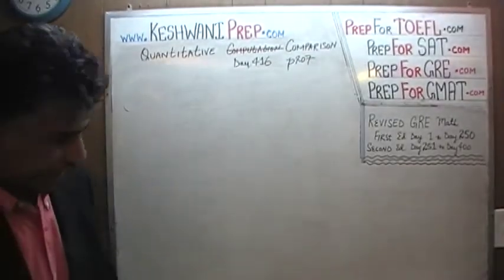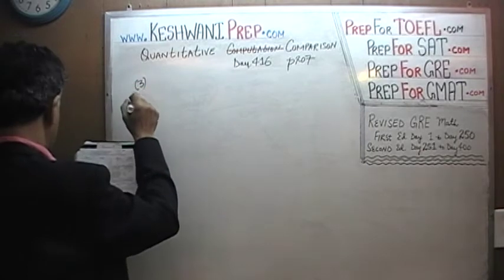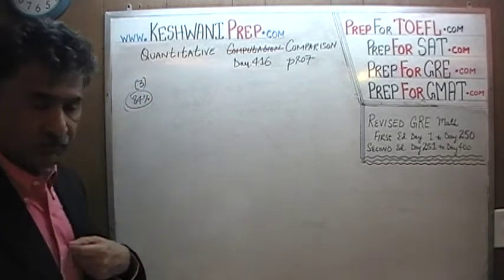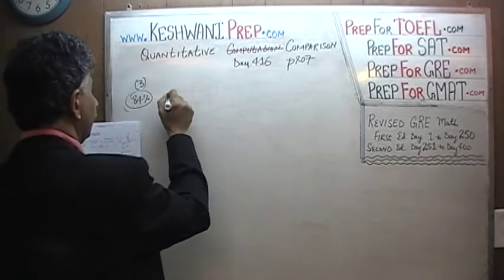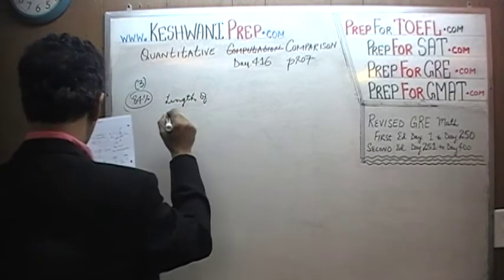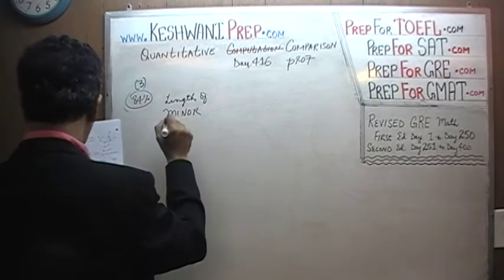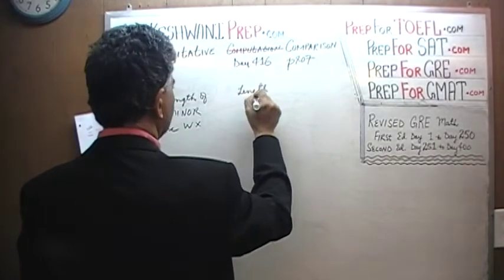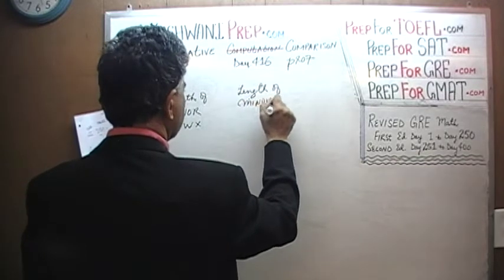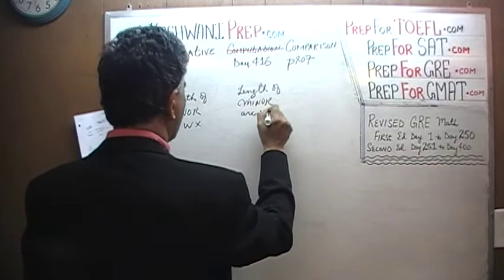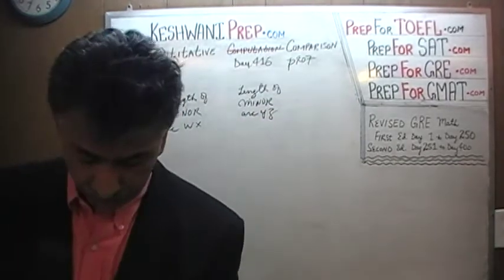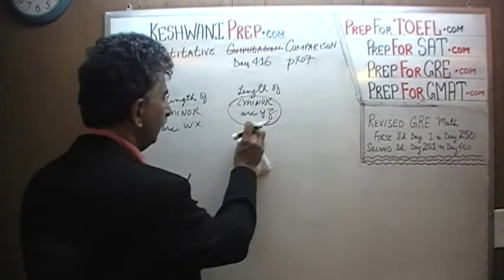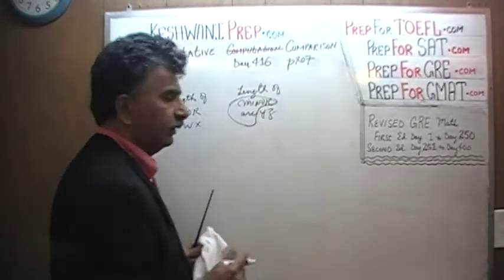Question number 3. Before we do it, note that this question had an 84th percentile — meaning 16% of people missed it. We are being asked to compare the length of the minor arc WX versus the length of the minor arc YZ. Before we actually do this problem, let's understand the term 'minor arc' — what does it mean?